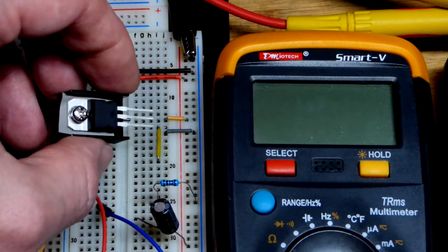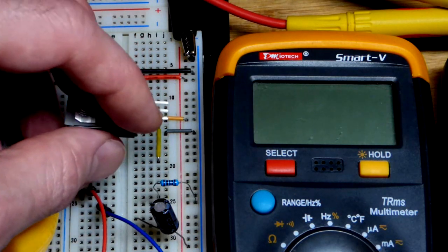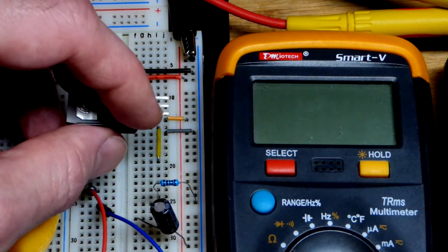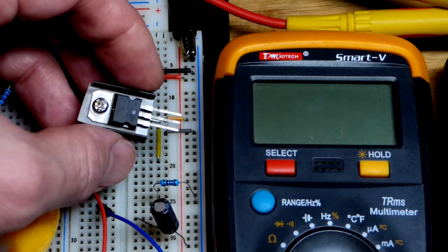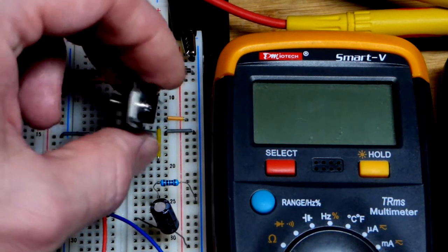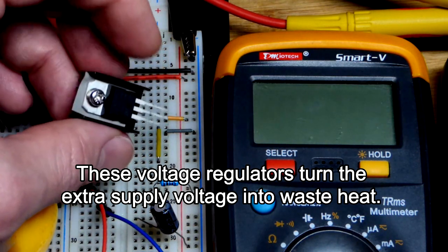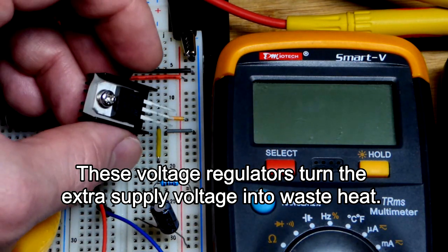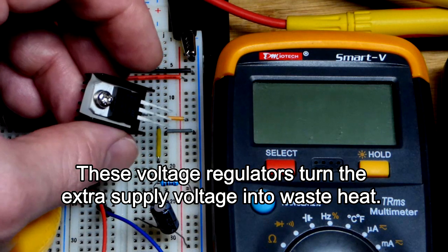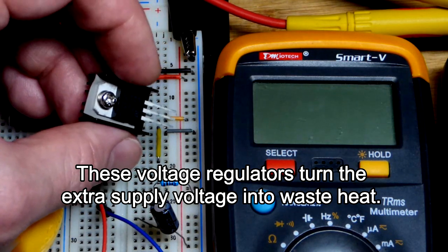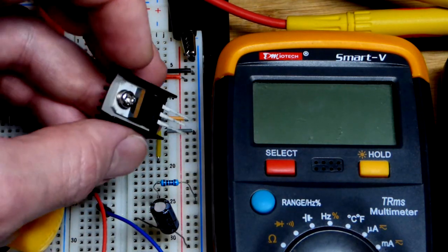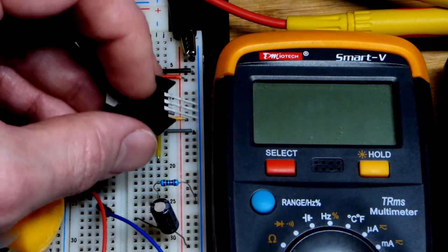The middle pin is the output and the bottom pin is the adjust. We're going to put it directly to ground and we could use a voltage divider resistors to set a voltage. It'll be 1.25 volts higher. We're going to be dropping 5 volts to 1.25 volts and a fair amount of current. So that's heat.